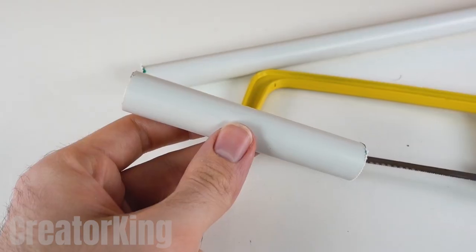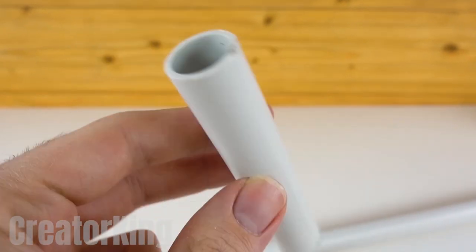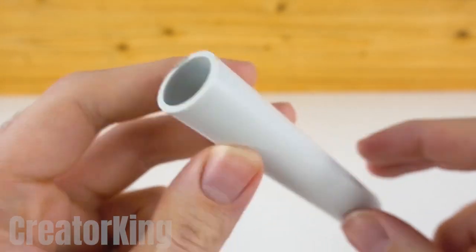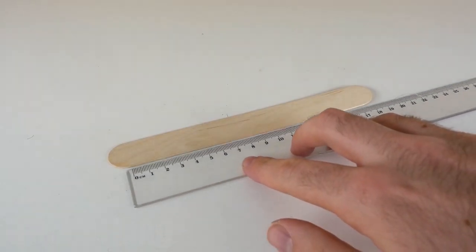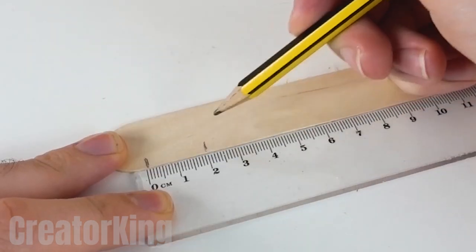This piece of plastic tubing will be one of the most important parts of the whole invention. Eat a popsicle to be able to use the stick. Mark every 2 cm along the length of the popsicle stick. Mark 5 in total.